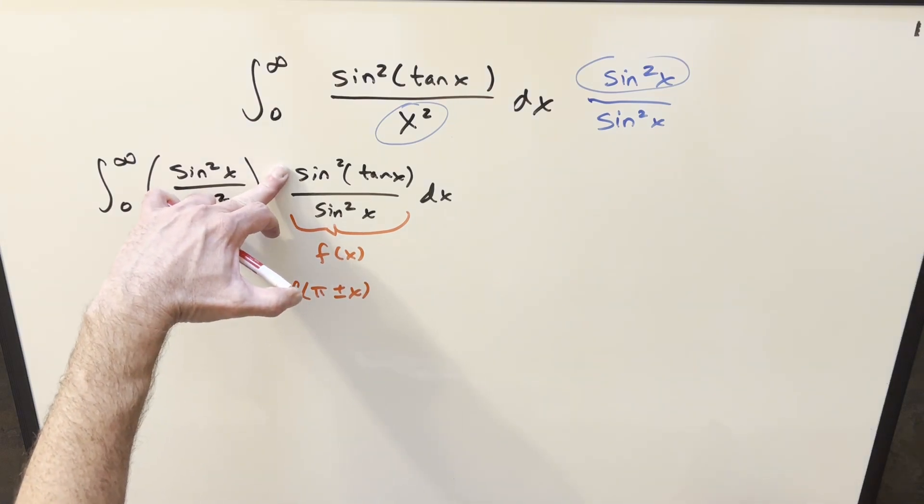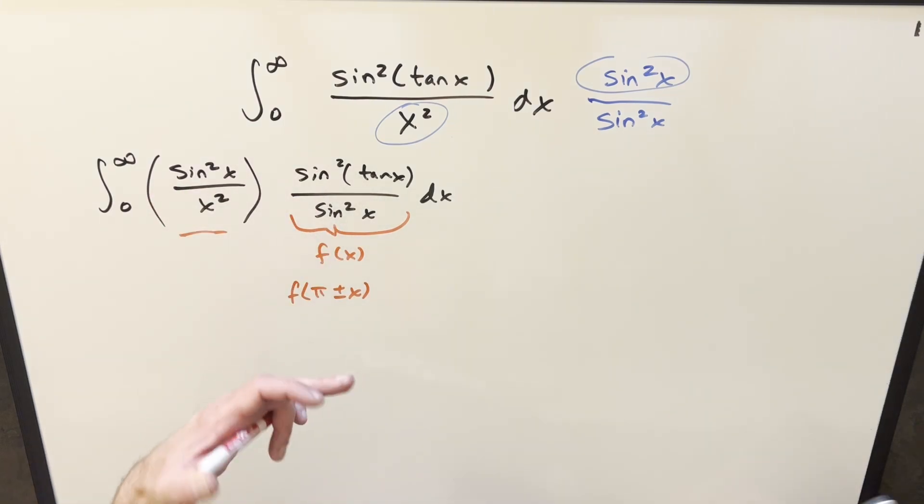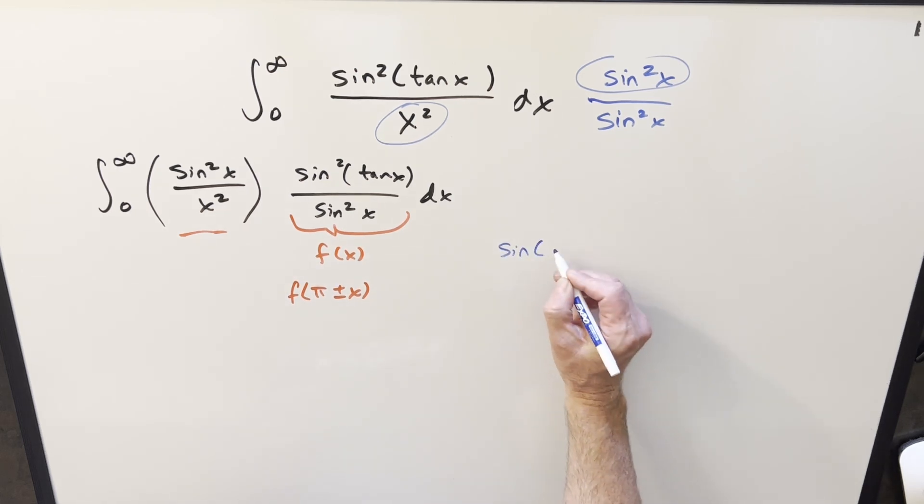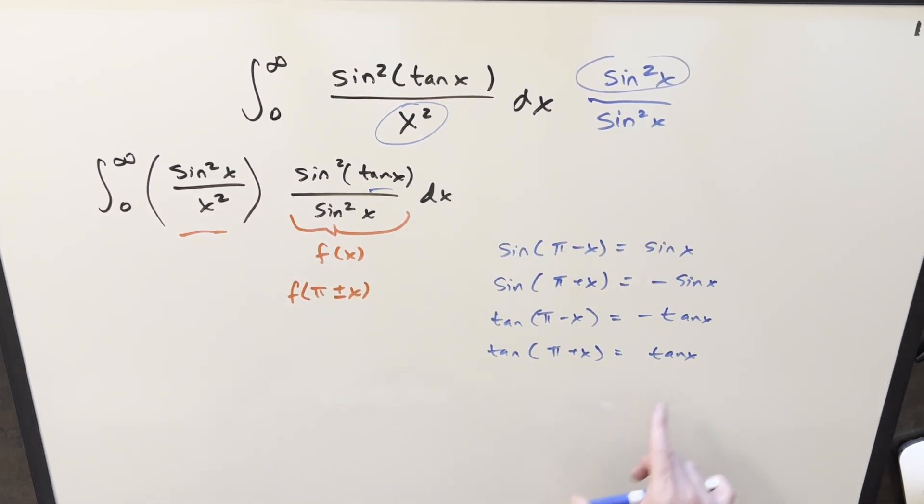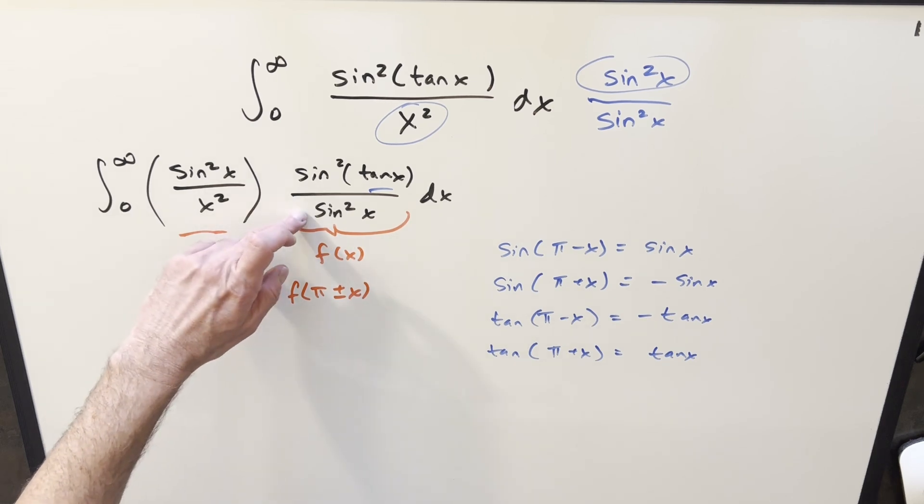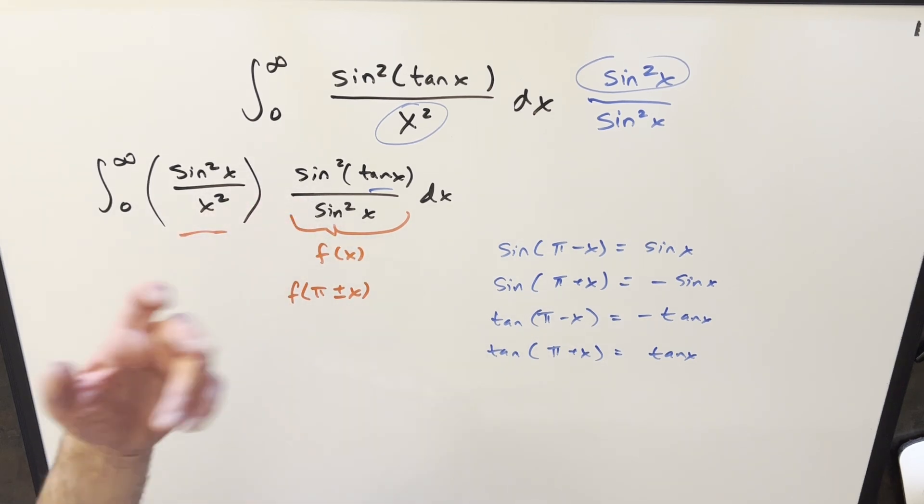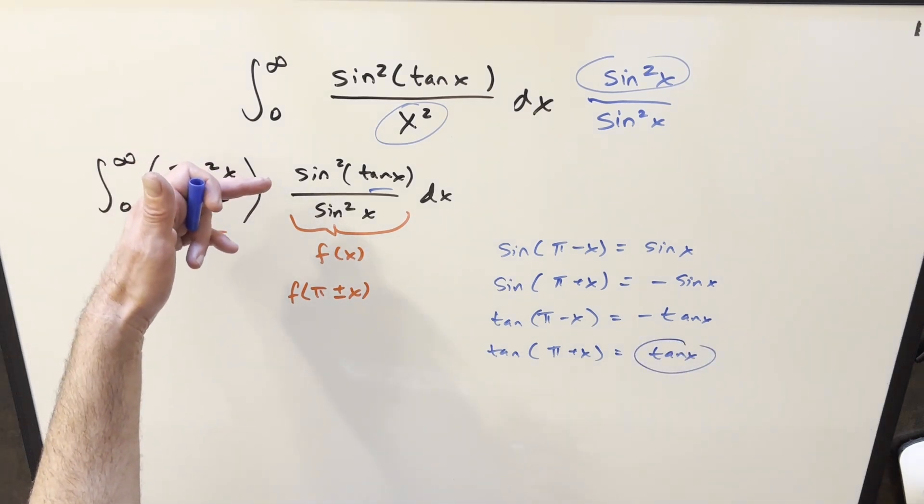Coming back here, this is clearly going to be even because everything is squared. Long story short, none of this is really going to matter very much because in the denominator, when you square it, this minus sign is going to go away. This case is going to clearly work because you just get back tangent.